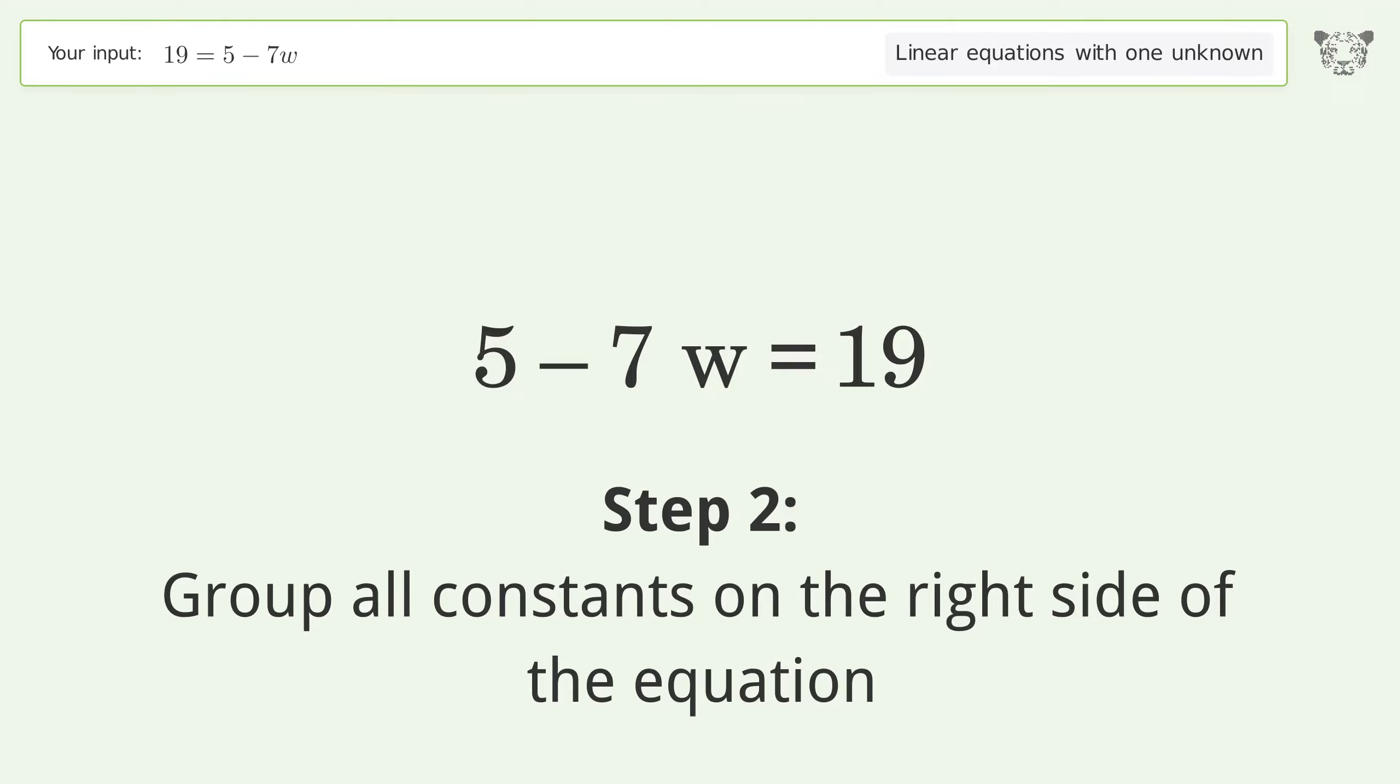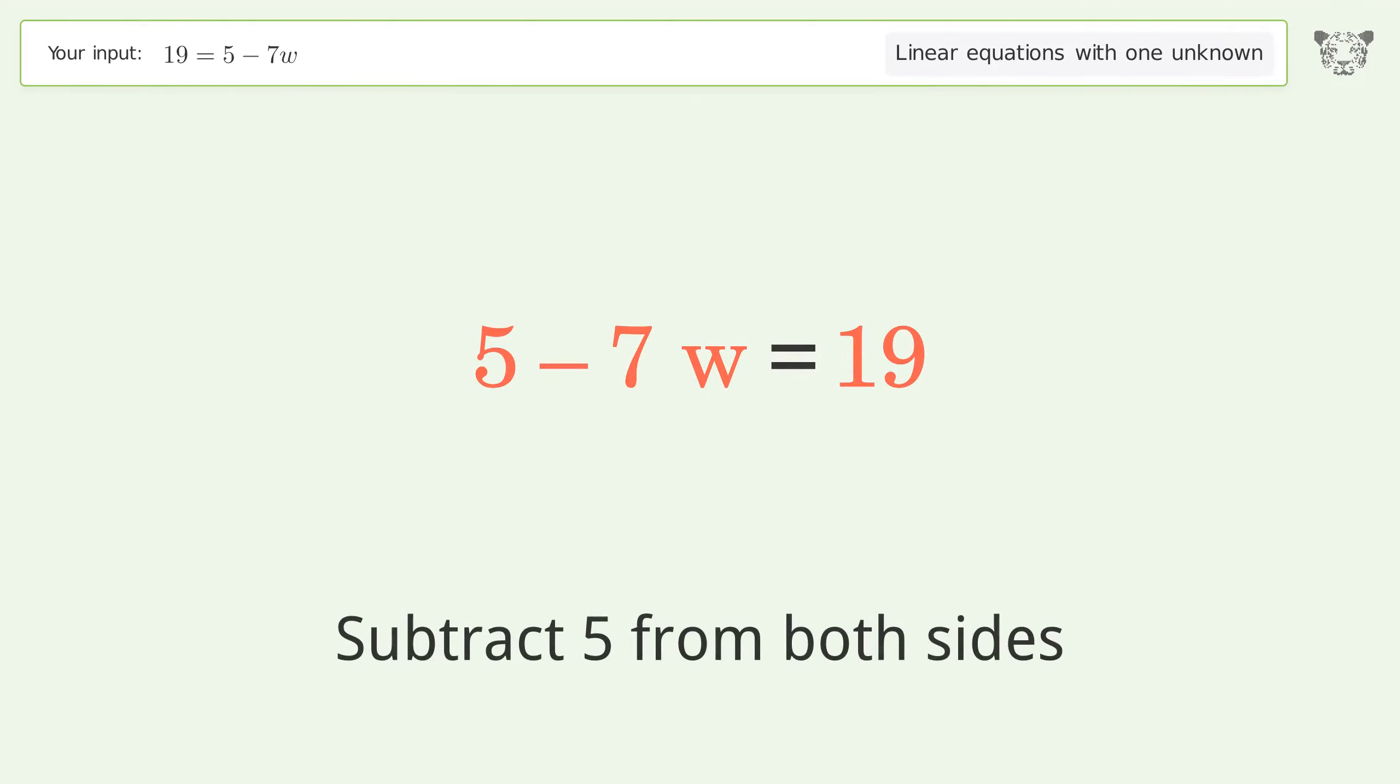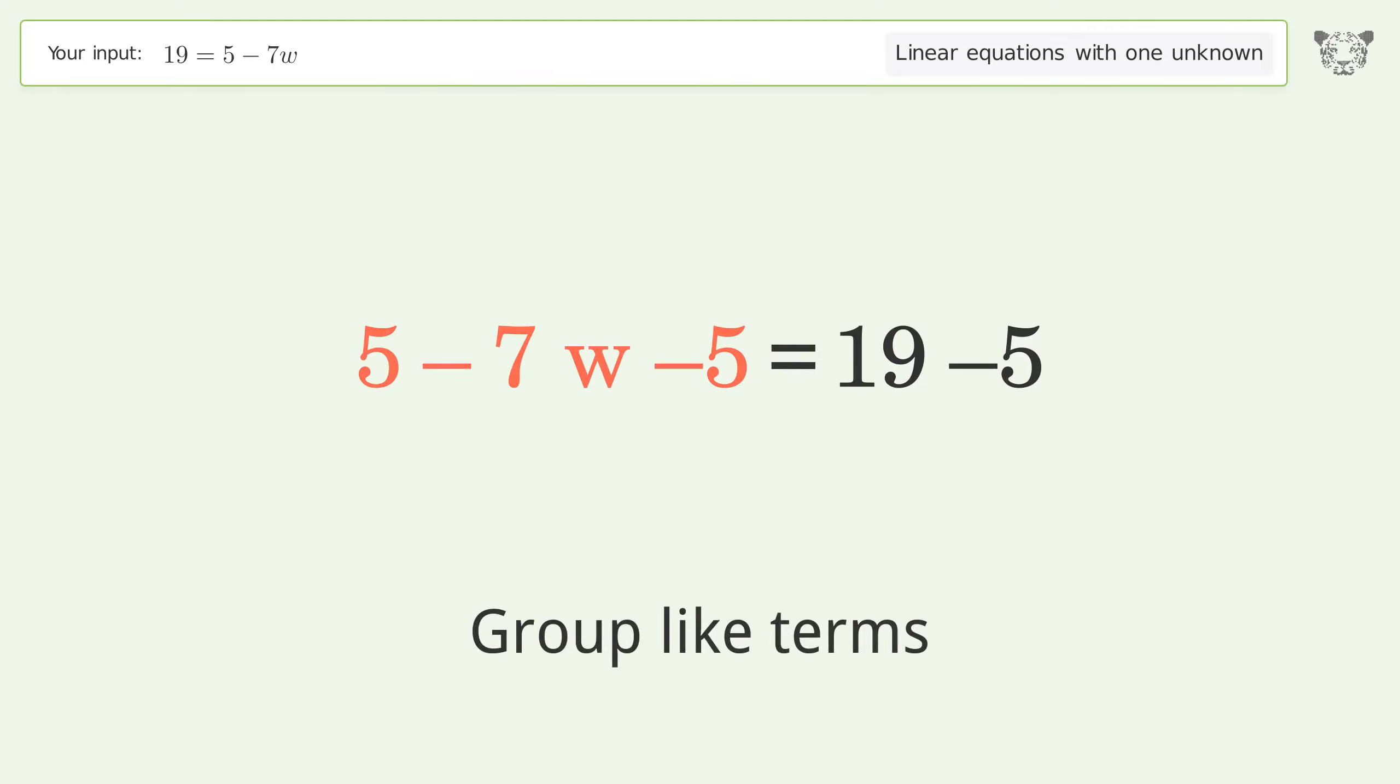Group all constants on the right side of the equation. Subtract 5 from both sides. Group like terms. Simplify the arithmetic.